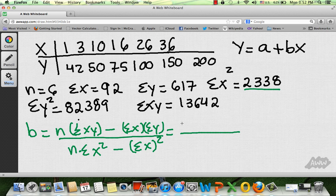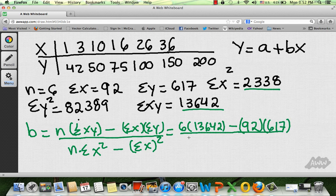Remember, n is equals to 6 times the sum of x times y. We have it here, 13,642 minus the sum of x, which is 92, and then times the sum of y, which is 617, over 6 times the sum of x squared, which is going to be this one, 2,338, minus 92 squared.